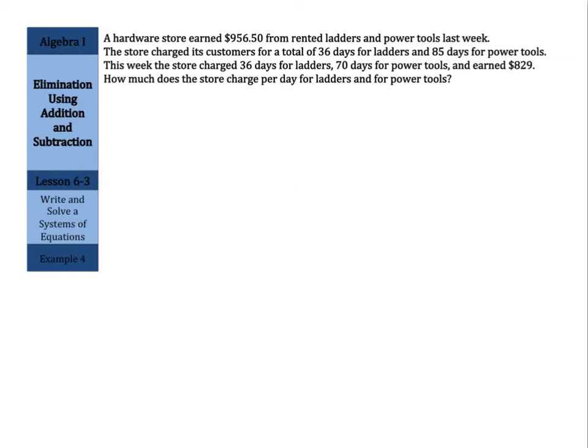So for last week, we have 36 days for ladders. So we could set that up as 36L plus the 85 days of power tools, so 85P, and that earned them $956.50. Now for this week, we had 36 days for ladders again, so 36L, 70 for power tools, so plus 70P. And that was a total of $829.